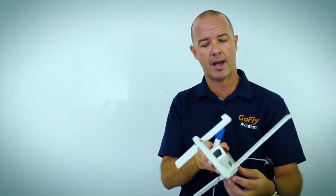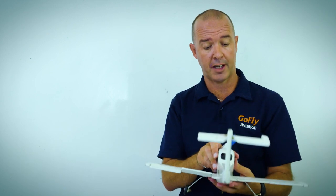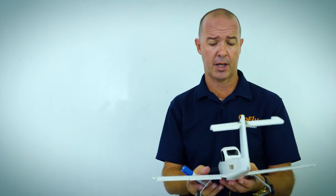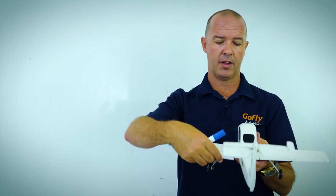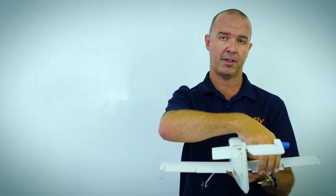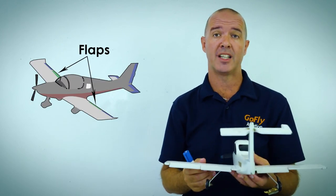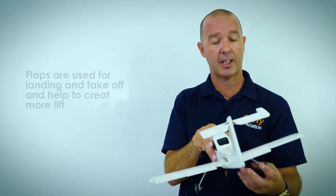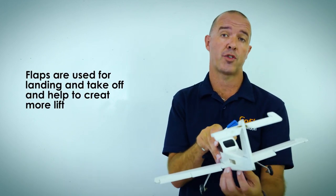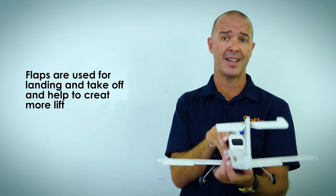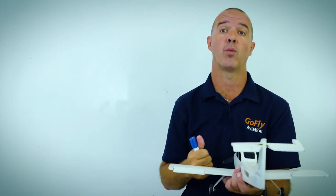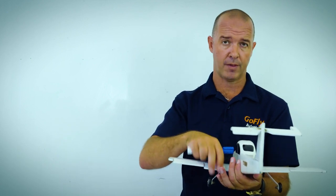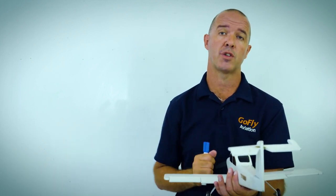We're now going to look at some different control surfaces we use for takeoff and landing — the flaps we talked about before. All flaps are a lift-generating device, so we use flaps for landing and takeoff. They basically create more lift, so we don't need as much runway to take off and we can land at a slower speed and use less runway to land. In the Sling aircraft, we generally use one stage of flap for takeoff and two stages for landing.